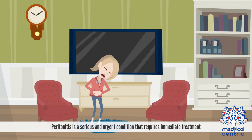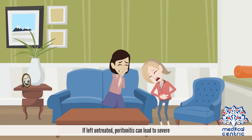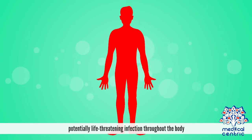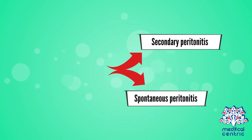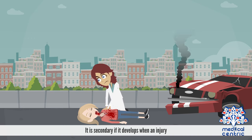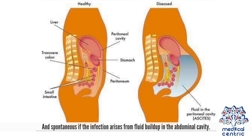Peritonitis is a serious and urgent condition that requires immediate treatment. If left untreated, peritonitis can lead to severe, potentially life-threatening infection throughout the body. There are two types of peritonitis – secondary peritonitis and spontaneous peritonitis. It is secondary if it develops when an injury or medical condition in the abdominal cavity allows infectious organisms into the peritoneum, and spontaneous if the infection arises from fluid buildup in the abdominal cavity.